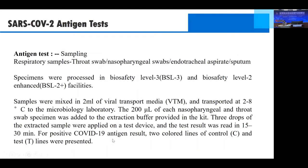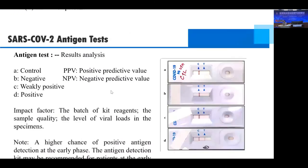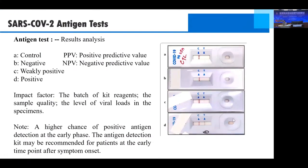For positive COVID-19 antigen results, two colored lines — in both the control and test regions — appear. Results include reference for control, negative, weakly positive, and positive. The PPV (positive predictive value) and NPV (negative predictive value) are important to understand. Impact factors for the antigen test include the batch of the kit reagent, sample quality, and the level of viral loads in the specimen. A higher chance of positive antigen detection exists at the early phase of infection, so the antigen detection kit is recommended for patients at an early time point after symptom onset.